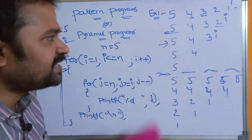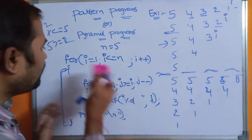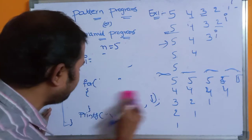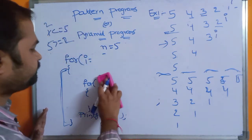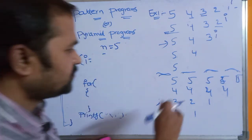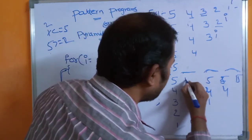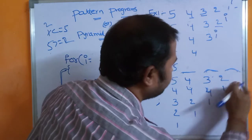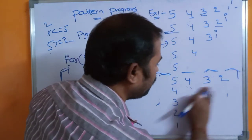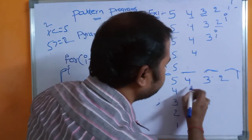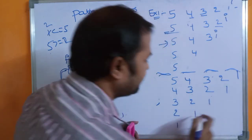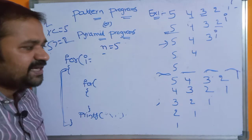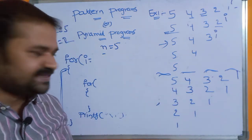Now let's write the program for the second pattern. For n=5, the first row contains 5 4 3 2 1, the second row contains 4 3 2 1, the third row contains 3 2 1, the fourth row 2 1, and the fifth row just 1.